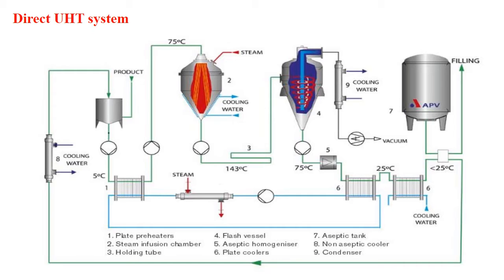Here in this flow chart we can see the working operation of the direct UHT system. Number one is the plate heat exchanger used for preheating. Number two is where the actual steam injection happens. Number three is the holding tube for about one second. Number four is a flash vessel with cooling arrangement at number nine. Number five is the aseptic homogenizer. Number six is a cooling system with plate heat exchanger. Number seven is the aseptic tank. Number eight is the non-aseptic cooler. From the aseptic tank it goes for packaging under aseptic conditions and then to storage and marketing.